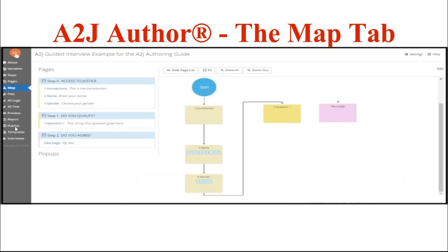The Map tab is the next one down. The Map tab is a way in which you can visually see how your interview is flowing. The Pages tab only lists pages alphanumerically, but the Map tab lets you see the bigger picture — the forest for the trees — and allows you to visually see the flow of your interview. It also gives you icon clues about what are in each question and is color-coordinated to match the steps.